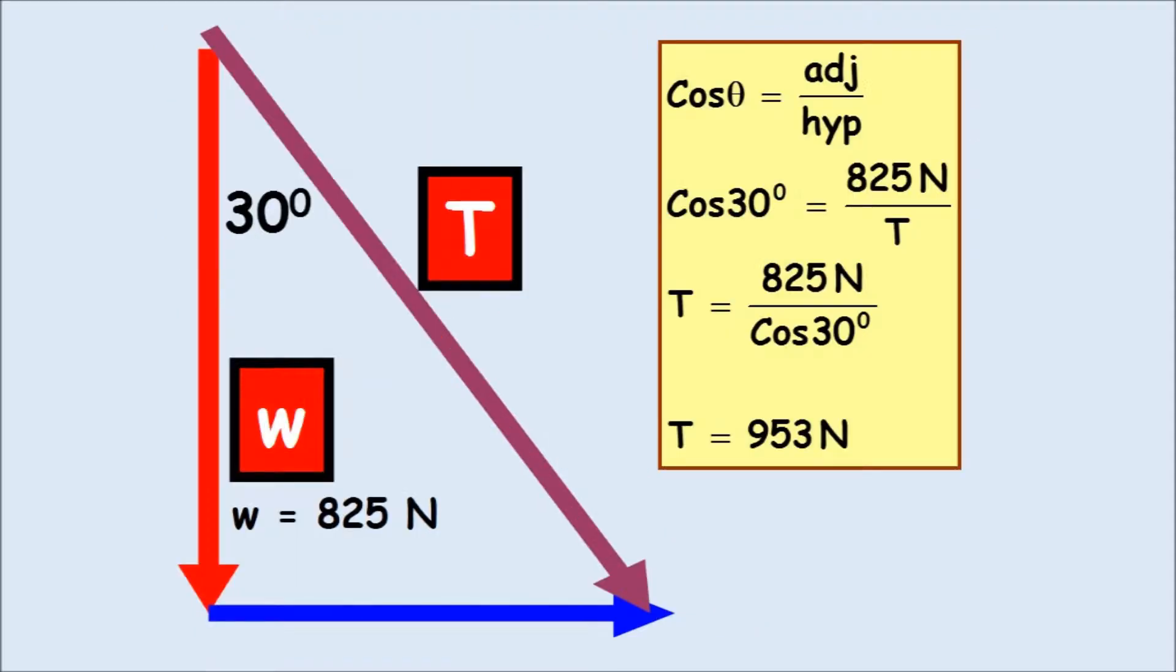So we can see how we're going to have her weight is going to be 825. And we need to find the tension. Now there's only one string. So the entire vertical is going to be 825 newtons. So you're simply solving for T again, same idea. And we get T equals 953.